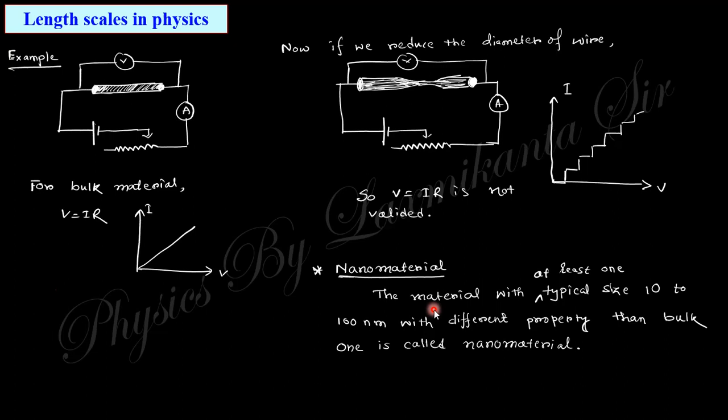The basic definition of nanomaterial is: a material whose size is in the order of 10 to 100 nanometers, and importantly, whose properties are different from the bulk material. Remember — size is important, but size alone is not sufficient. If you have a material of nanometer order but its property is similar to the bulk, you cannot call it a nanomaterial. The size can be 100 nm or even 300 nm — what matters is that the property differs from the bulk.